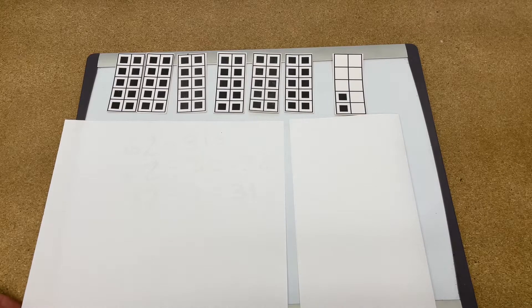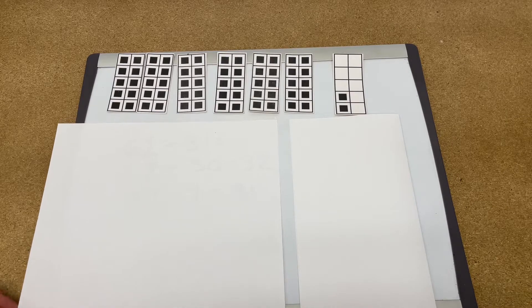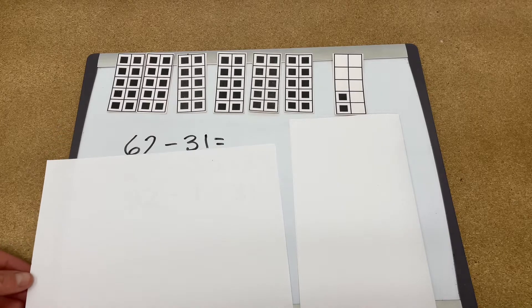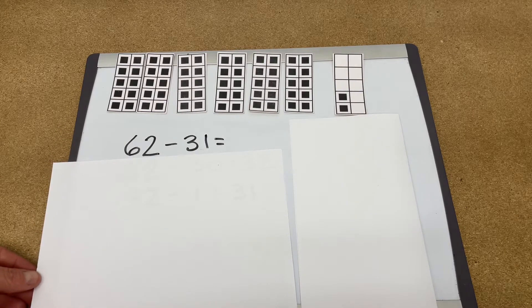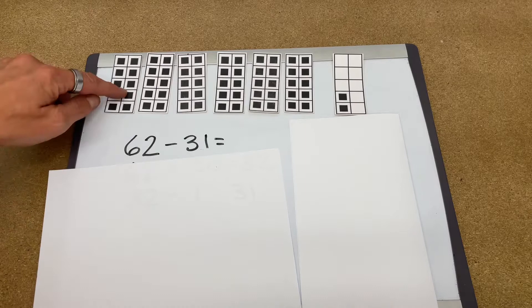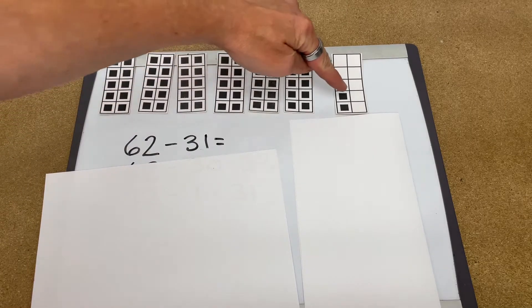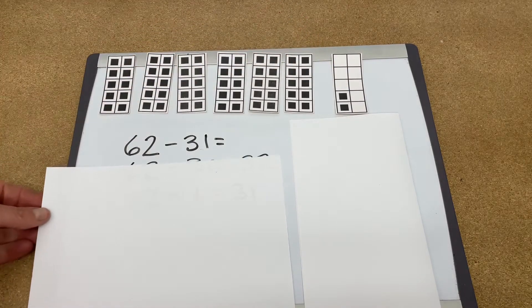When we subtract using the algorithm, we have to make sure we understand the horizontal subtraction first. If we have a question of 62 take away 31, we count out 62 and we take away 31. We'll write it like this.